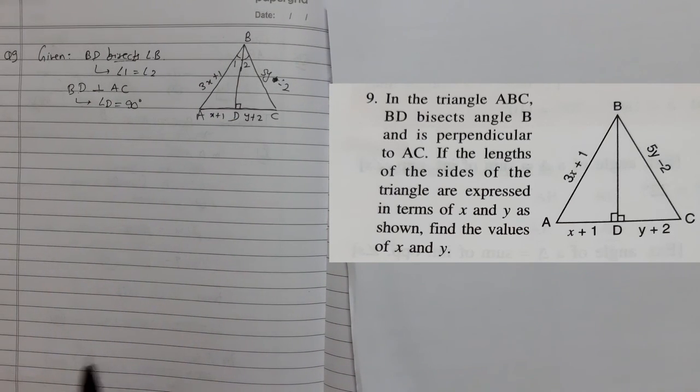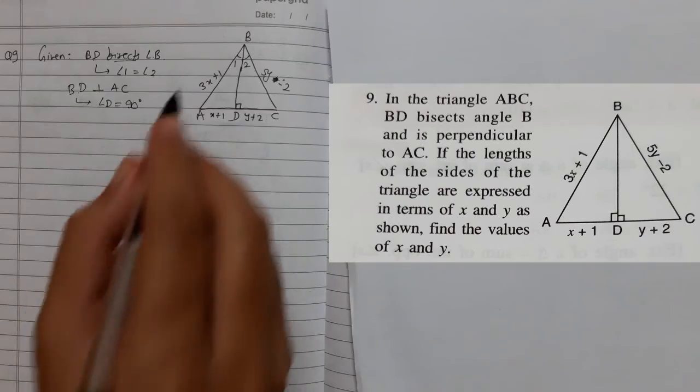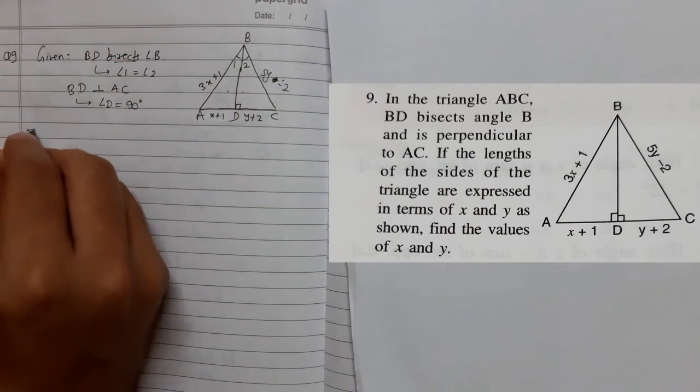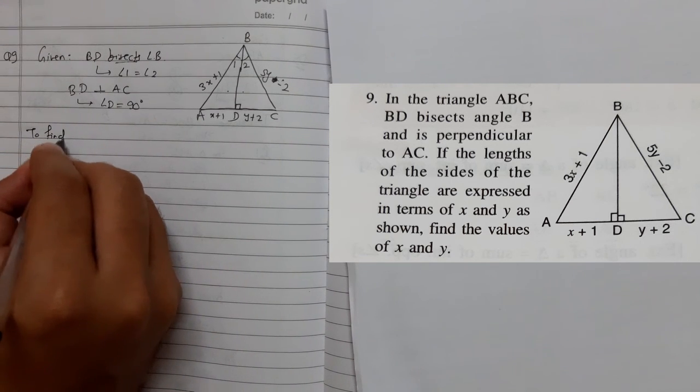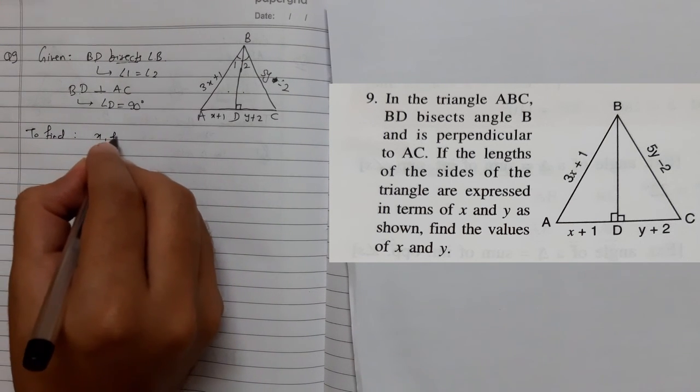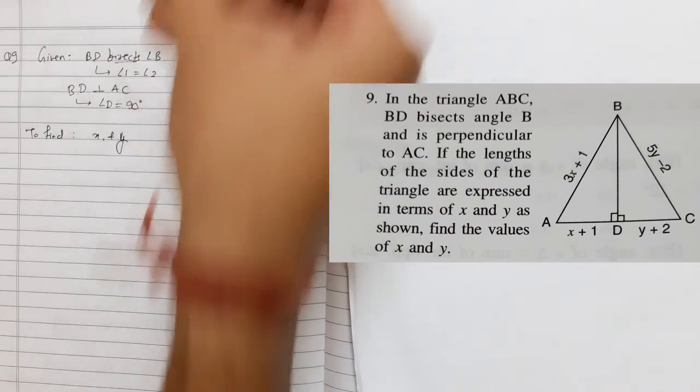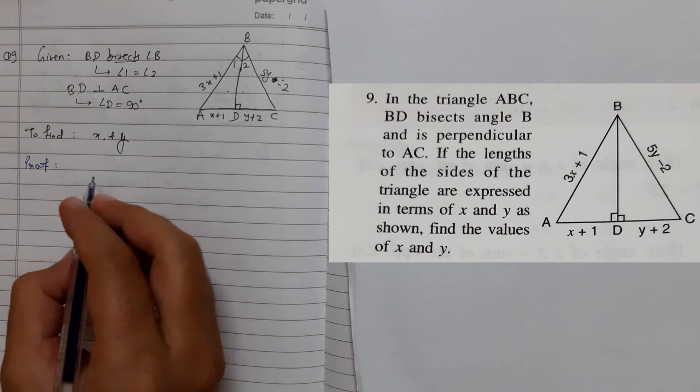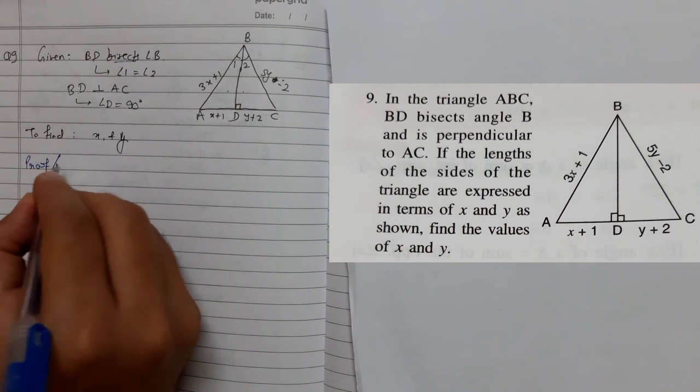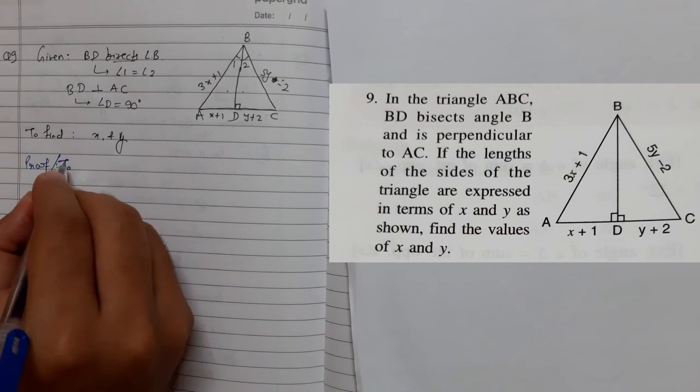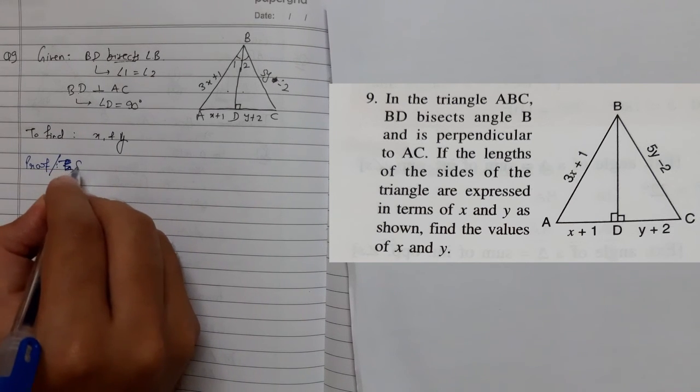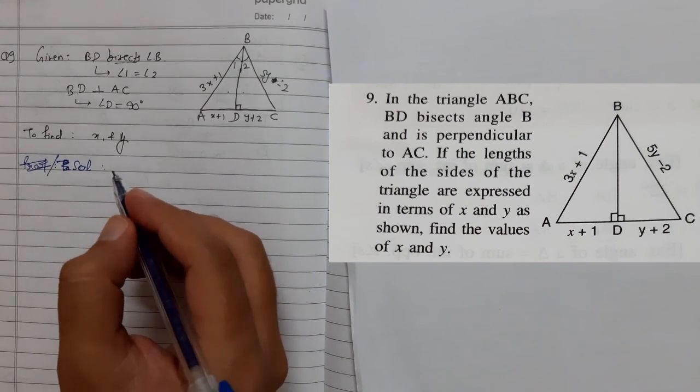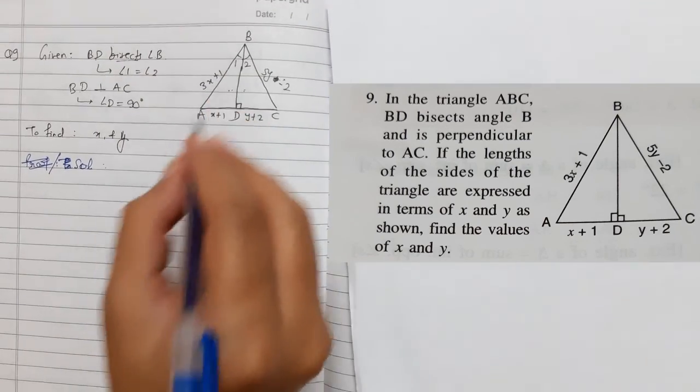Before jumping on to the values of x, we should make them congruent. To find x and y, the question is easy and the solution is also easy. So first of all, we should write 'to find solution,' not proof. We are not proving, we are finding. First of all, we make these two congruent.